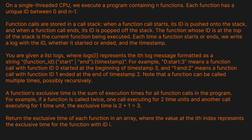On a single-threaded CPU we execute a program containing n functions. Each function has a unique ID between zero and n minus one. Function calls are stored in a call stack. When a function call starts, its ID is pushed onto the stack, and when a function call ends, its ID is popped off the stack. The function whose ID is at the top of the stack is the current function being executed. Each time a function starts or ends, we write a log with the ID, whether it started or ended, and the timestamp.